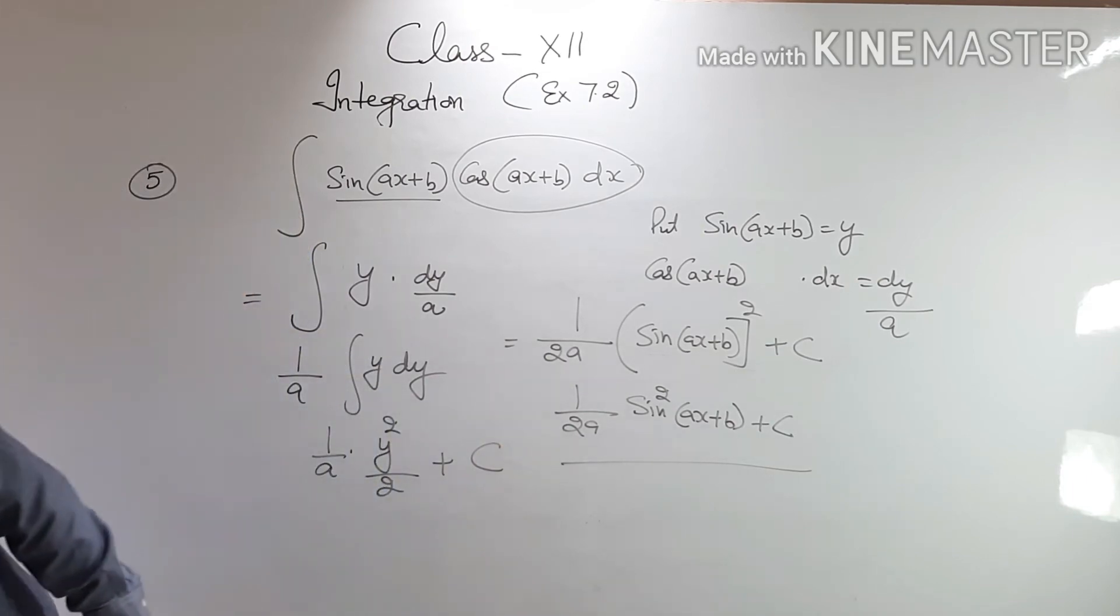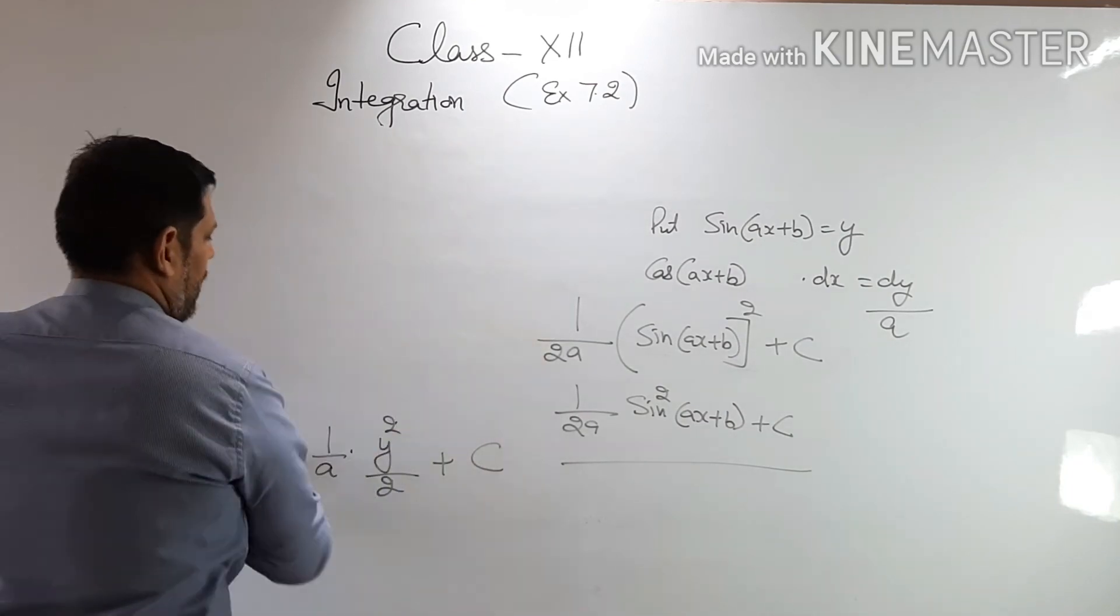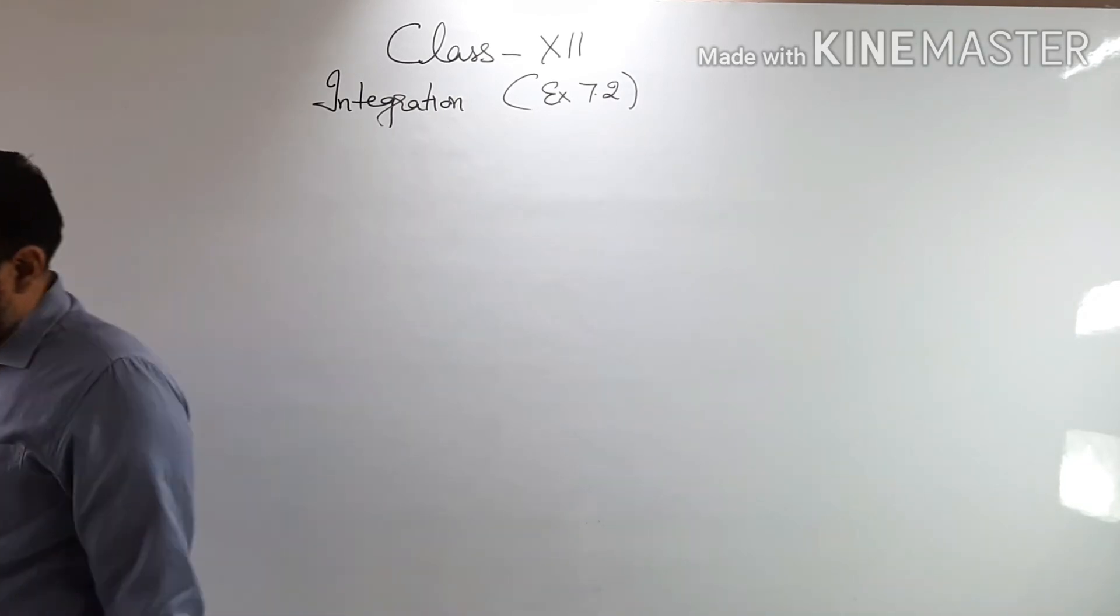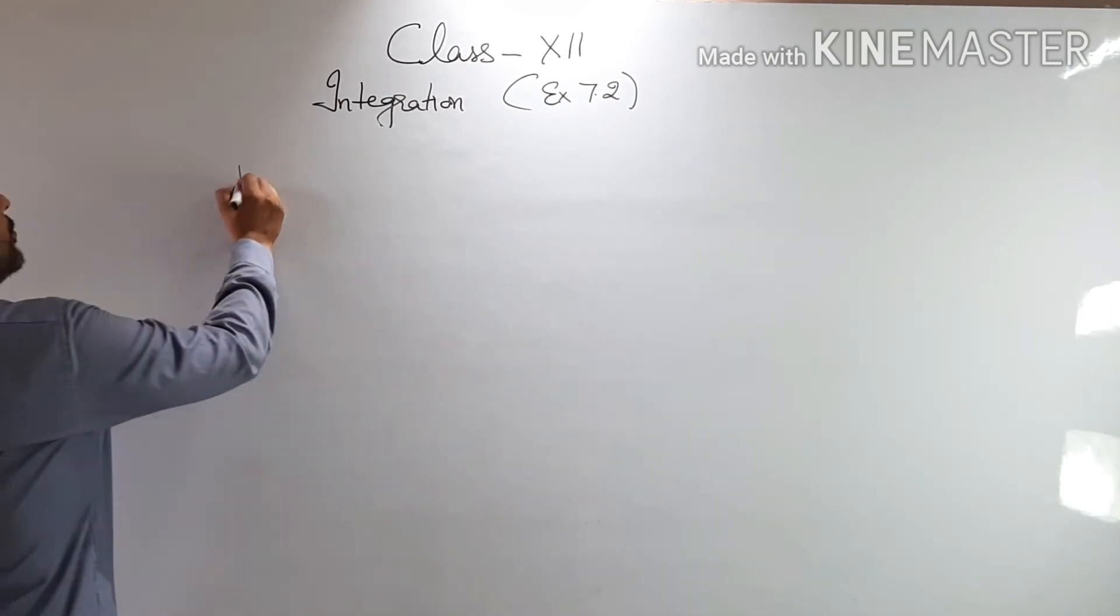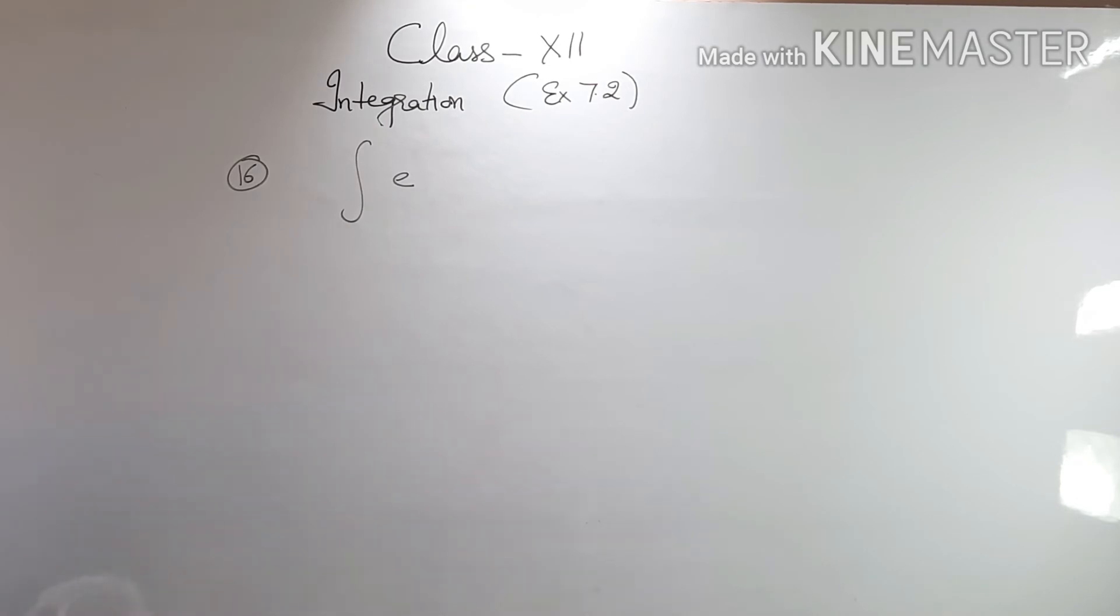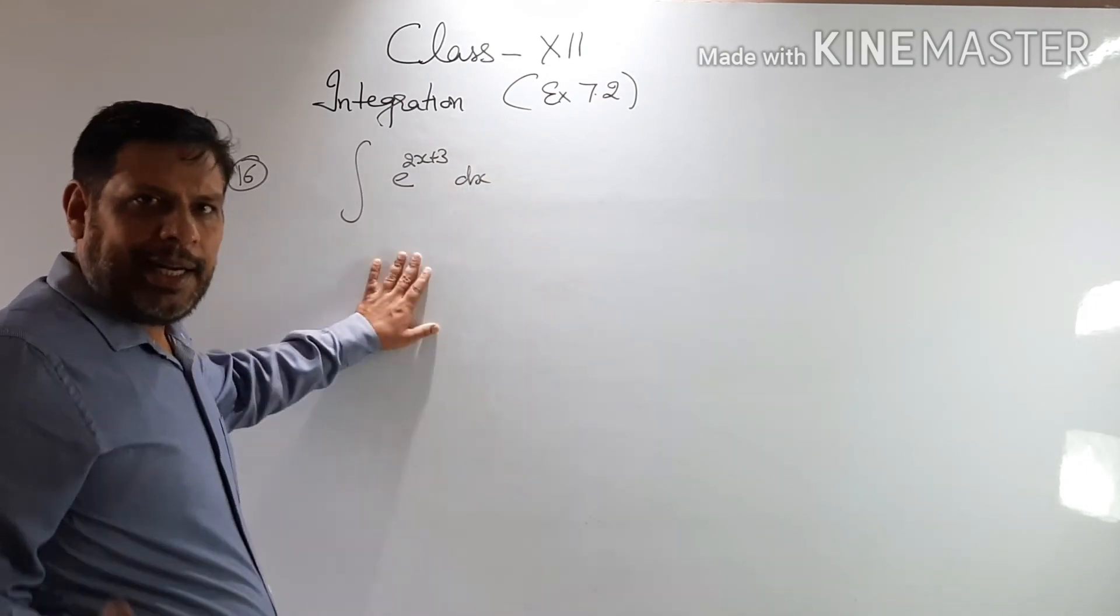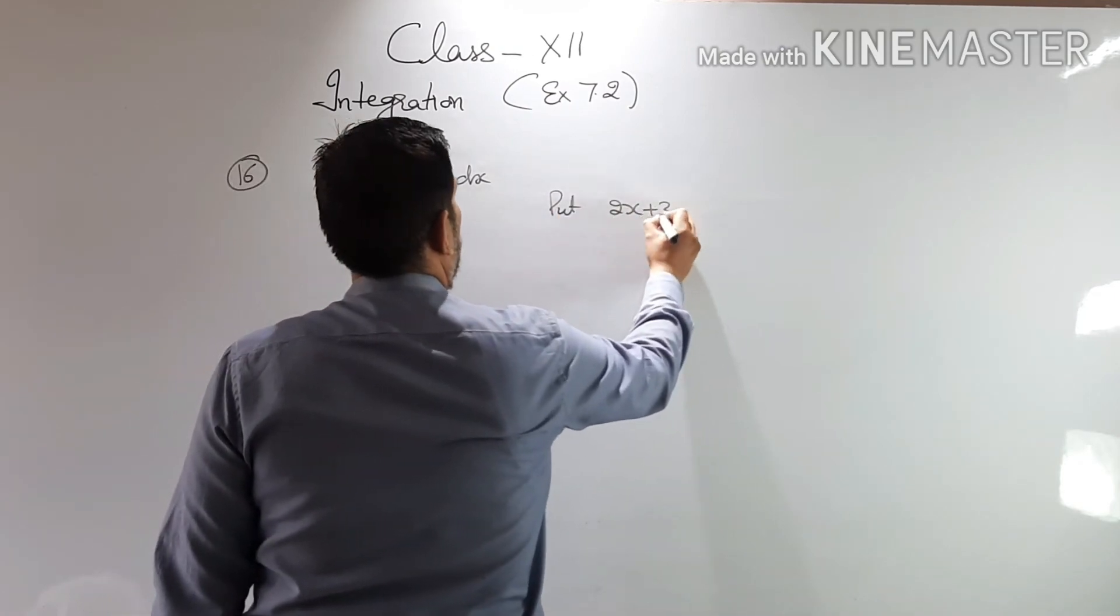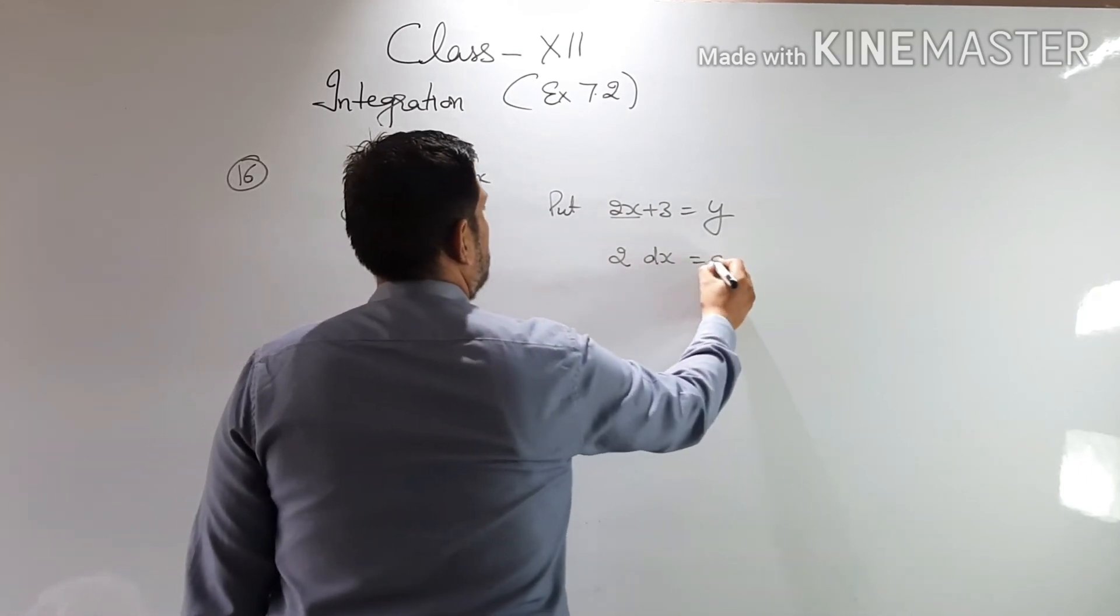Let's have one more example. You have seen algebraic forms, you have seen a little trigonometric form, you have seen logarithmic integral. Now let's have question number 16. Find the integral e raised to the power 2x plus 3. You can do this directly and also by substitution. So you put here 2x plus 3 equals y. So this will become, its derivative I get 2 dx equals dy, means dx has become dy by 2.